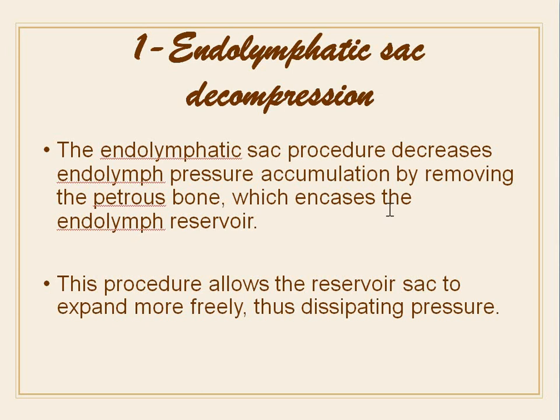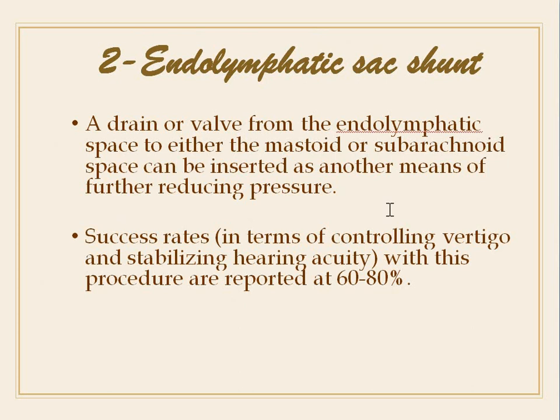The petrous bone is removed and pressure is released. In the endolymphatic sac shunt, a drain or valve from the endolymphatic space to either the mastoid or subarachnoid space is inserted to further reduce pressure. Success rates for controlling vertigo and stabilizing hearing with this procedure are reported at 60 to 80%.